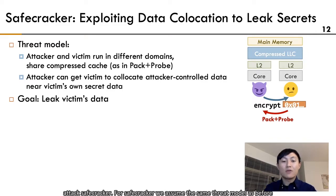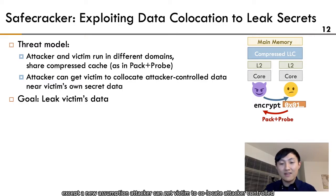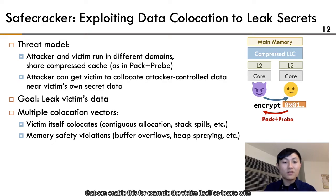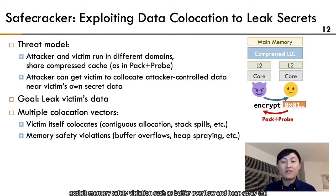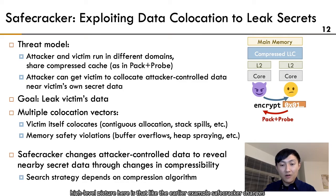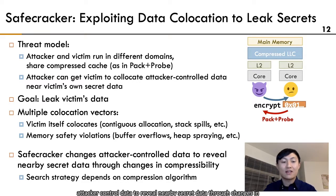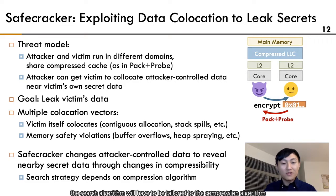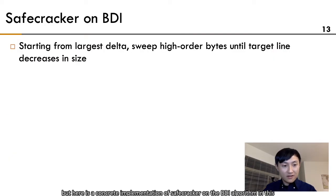For Safecracker, we assume the same threat model as before, plus a new assumption: the attacker can get the victim to collocate attacker-controlled data near the victim's secret data. There are multiple collocation vectors that can enable this. For example, the victim itself collocates them with back-to-back memory allocation or stack spills. The attacker can also exploit memory safety violations such as buffer overflow and heap spraying. The high-level picture is that Safecracker changes attacker-controlled data to reveal nearby secret data through changes in compressibility, and measures this change with the Pack and Probe attack. The search algorithm is tailored to the compression algorithm.